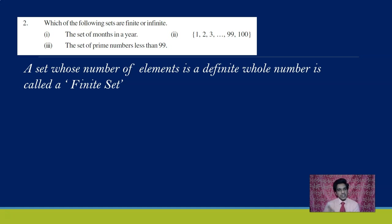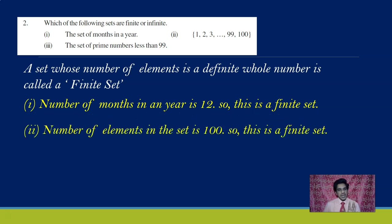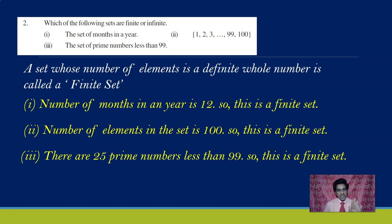Look at the first question: the set of months in a year. There are 12 months, which we can count, so this is a finite set. Next: the set of natural numbers from 1 to 100. There are 100 numbers, which we can count, so this is also a finite set. Next: the set of prime numbers less than 99. There are actually 25 such prime numbers — 2, 3, 5, 7, 11, 13, 17, 19, 23, 29, and so on. Since we can count them, this is also a finite set.